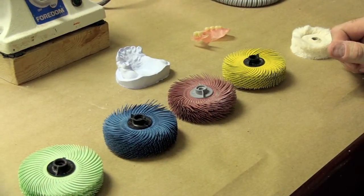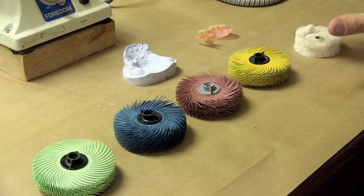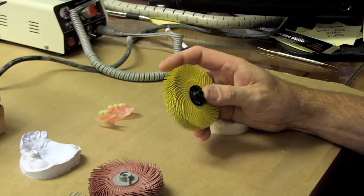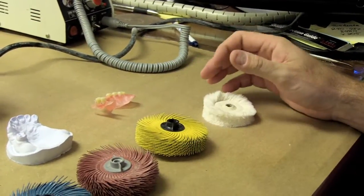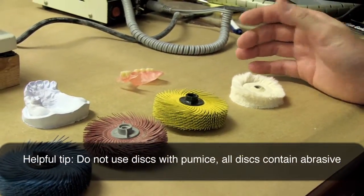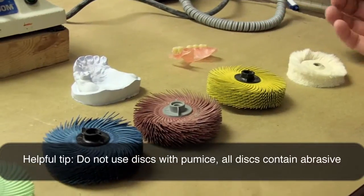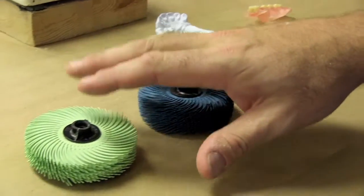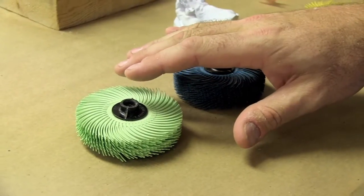First thing we're going to talk about is these discs. They start with your yellow. They have the abrasive already in the bristles, so the yellow is going to be your most abrasive. This is going to be like your pumice when you're doing regular acrylics. Next, we'll have our red, which is a little bit of a finer abrasive, the blue, and then the green, which you'll actually start to get a bit of a shine on the appliance with the green.